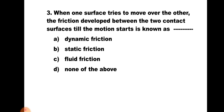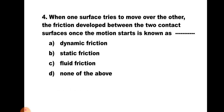Question number three: When one surface tries to move over the other, the friction developed between the two contact surfaces until the motion starts is known as — a) Dynamic friction, b) Static friction, c) Fluid friction, and d) None of the above. In the experiment with a block on a rough surface, as the gradually increasing force is applied, there is no motion because frictional force is self-adjusting up to a certain limit. The frictional force developed until motion takes place is always static friction. Hence the correct answer is b) Static friction.